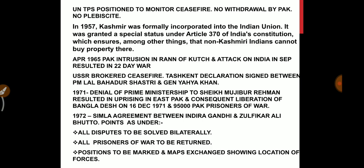Then came 1971. The denial of the prime ministership to Sheikh Mujibur Rahman resulted in an uprising in East Pakistan, and the consequent liberation of Bangladesh on 16 December 1971, along with the surrender of 95,000 Pakistani prisoners of war.